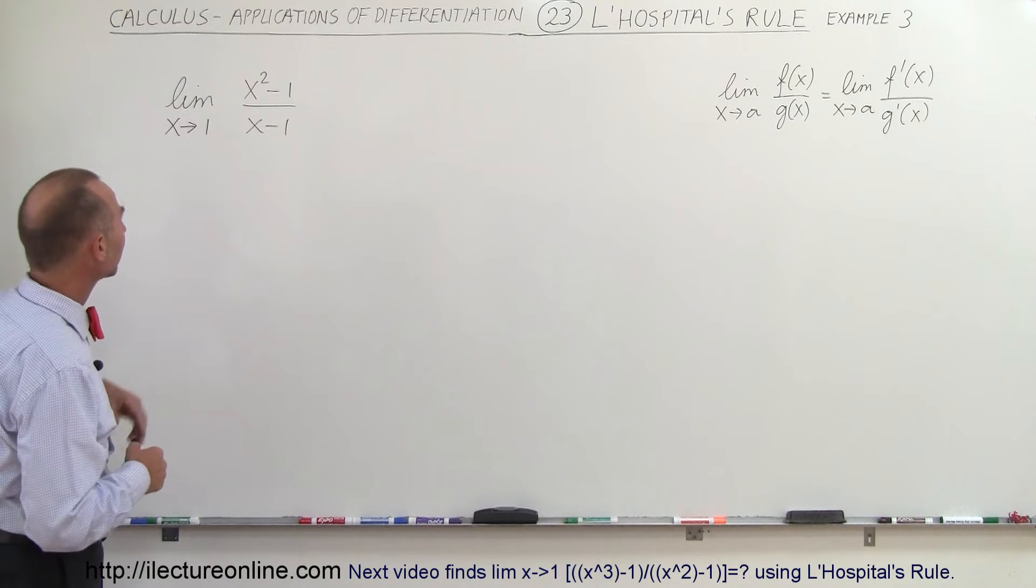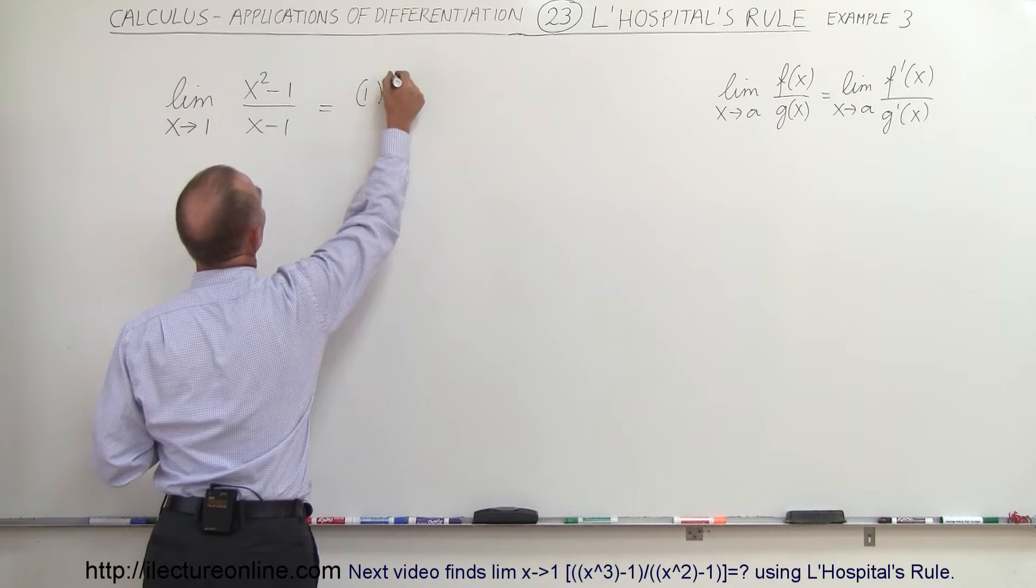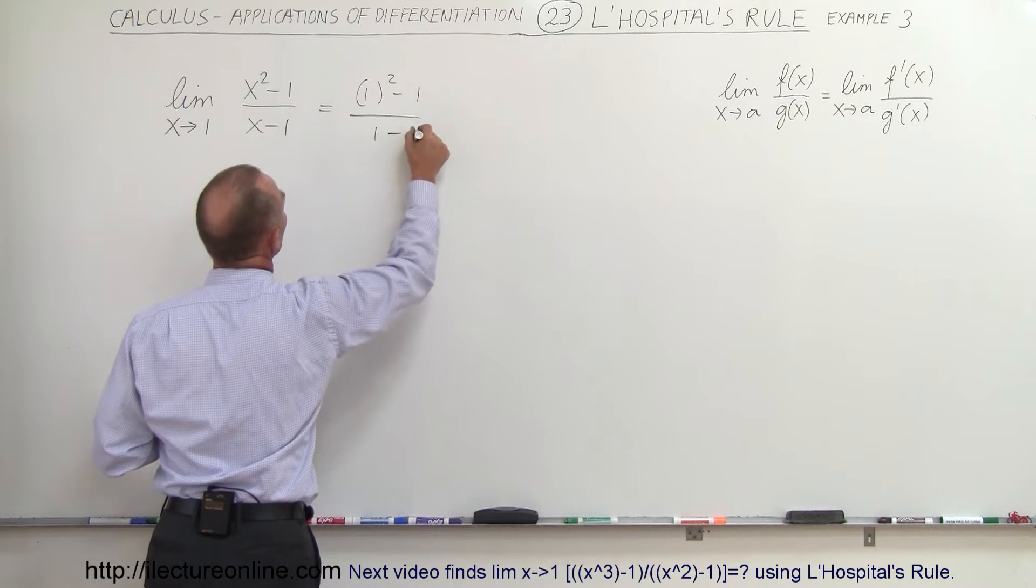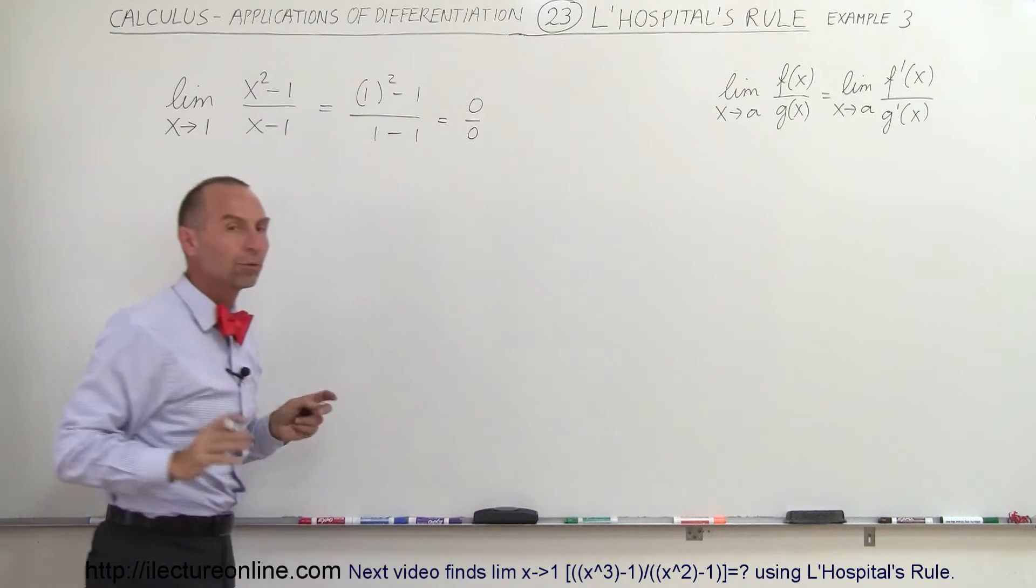Initially you take a look at it and if I plug in the limit, let's try that. So you say okay this is equal to 1 squared minus 1 divided by 1 minus 1, which would be 0 divided by 0, and you have an indeterminate form.